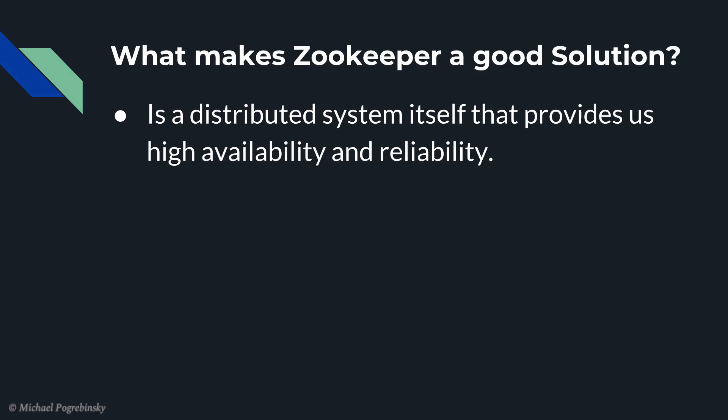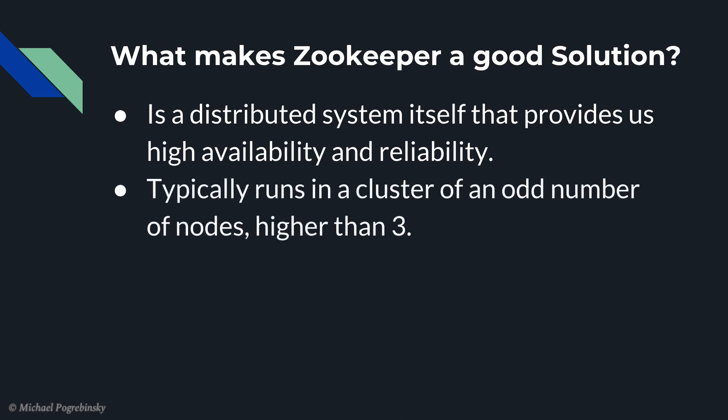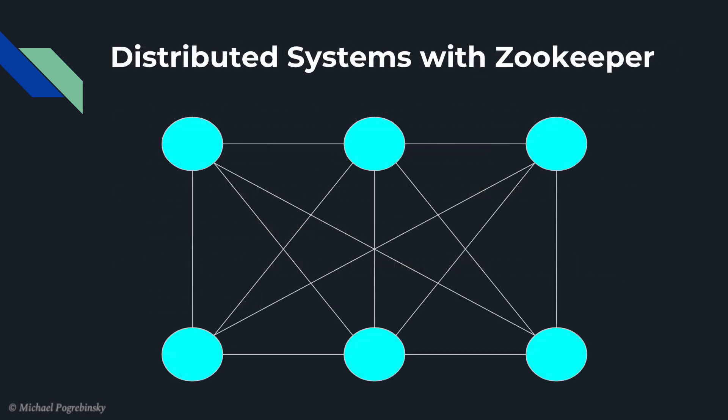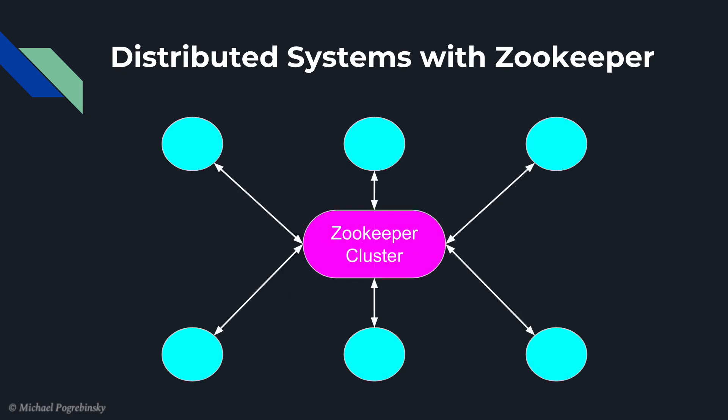So what makes Zookeeper such a good solution? Zookeeper is a distributed system by itself, and by using lower-level algorithms, it guarantees us high availability and reliability out of the box. In production, it typically runs as a cluster of three or more nodes. Thanks to this redundancy, we can afford to lose a Zookeeper node and still keep the system fully functional. The way we are going to use Zookeeper is instead of having our nodes communicating directly with each other to coordinate the work, they are going to communicate with the Zookeeper servers directly instead.